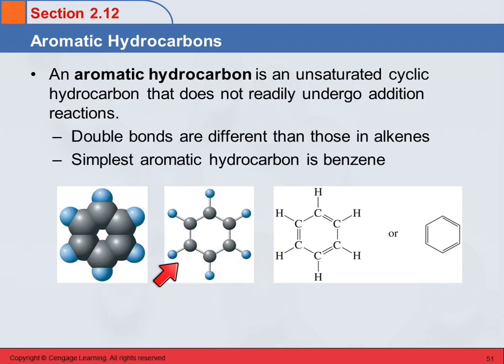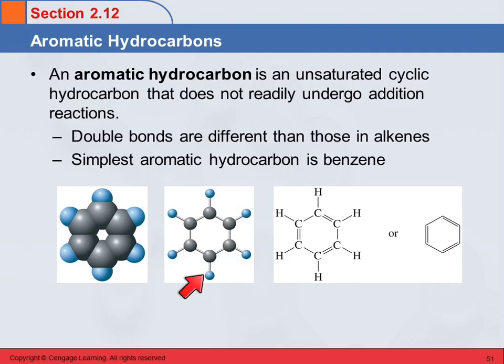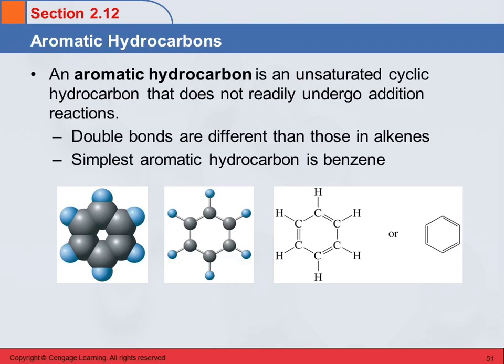This is a ball-and-stick model where the multiple bonds are not represented. This is not acceptable in terms of looking at the octets on carbon, because here carbon would have one, two, three bonds, and we've learned that carbon has four bonds to get its complete octet. So there's double bonds missing.